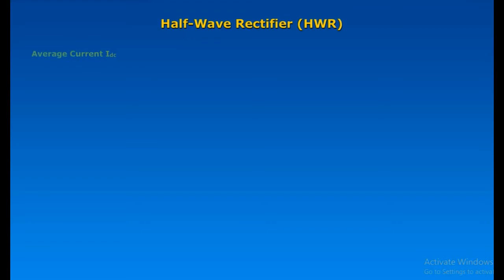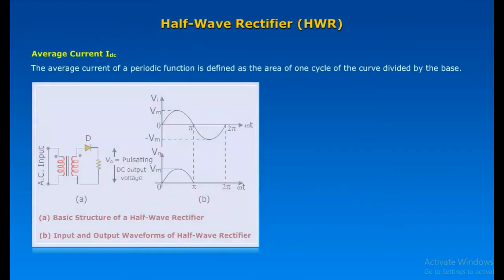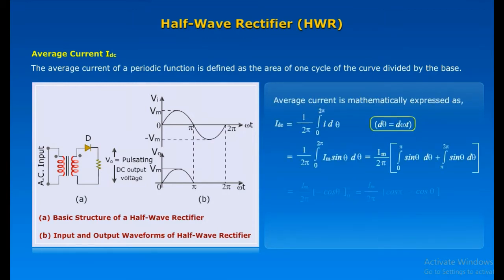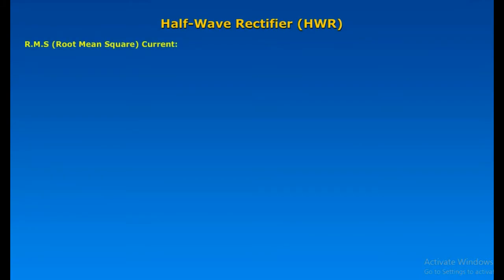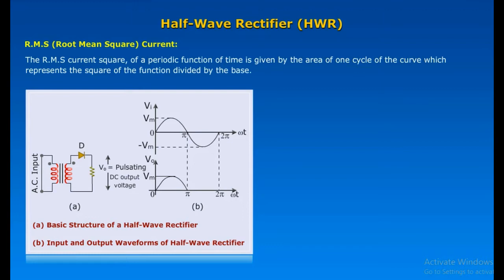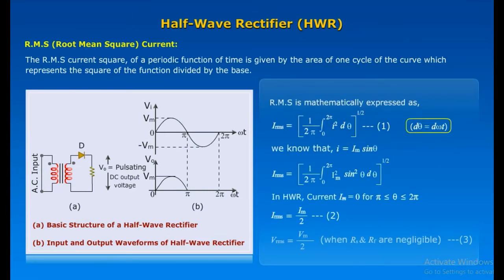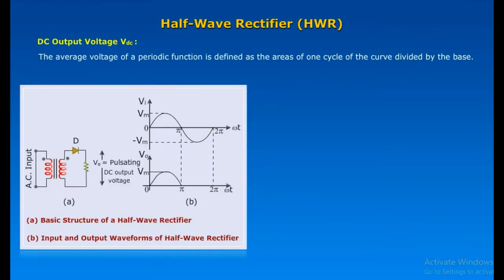Half-Wave Rectifier Average Current IDC: The average current of a periodic function is defined as the area of one cycle of the curve divided by the base. Average current is mathematically expressed accordingly. The RMS current: the square of a periodic function of time is given by the area of one cycle of the curve representing the square of the function divided by the base. RMS current is mathematically expressed as shown.